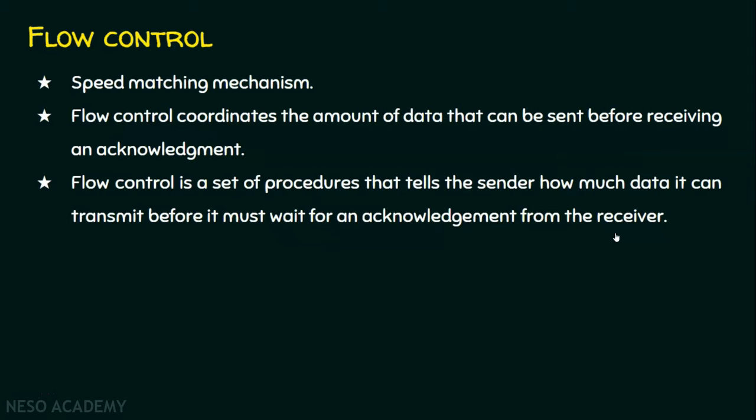In networking, we consider both sender and receiver. But in flow control, we are mainly focusing on the receiver. Why? Because if there is a fast sender and there is a slow receiver, this will always cause a problem. Because the receiver cannot handle the speed of data reception that was sent by the sender. In case, if the sender is a slow sender and the receiver is a fast receiver, that's not at all an issue. So we are always focusing on the receiver.